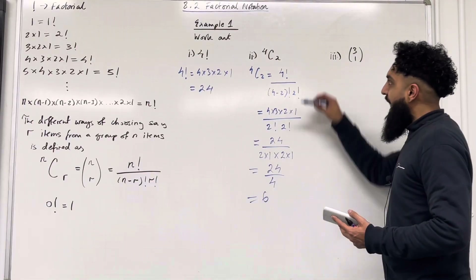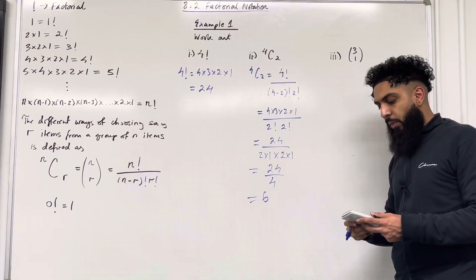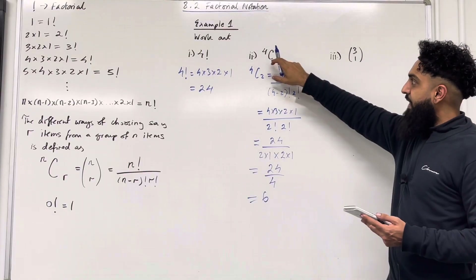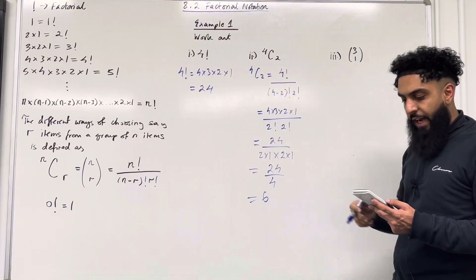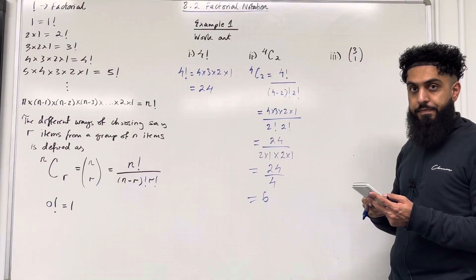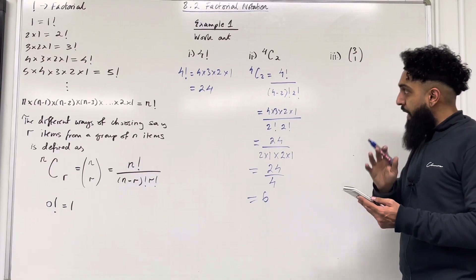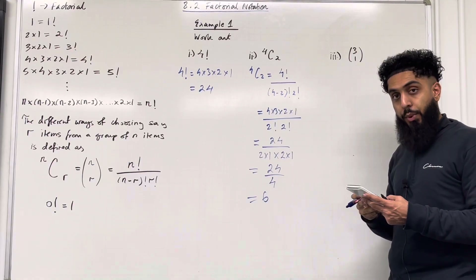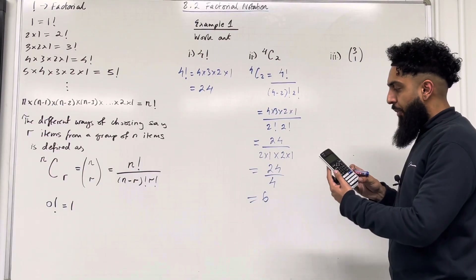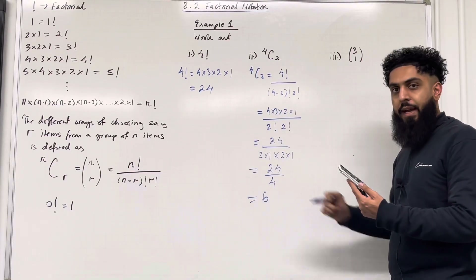We can calculate this directly using the calculator. Type in 4, then press shift and divide to get the C symbol, then type in 2 — giving 4C2. Press equal and you get exactly 6.